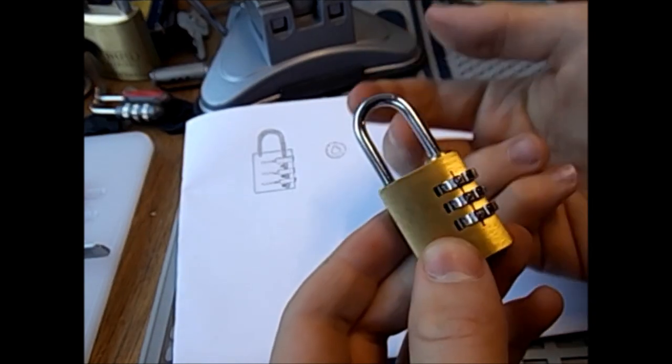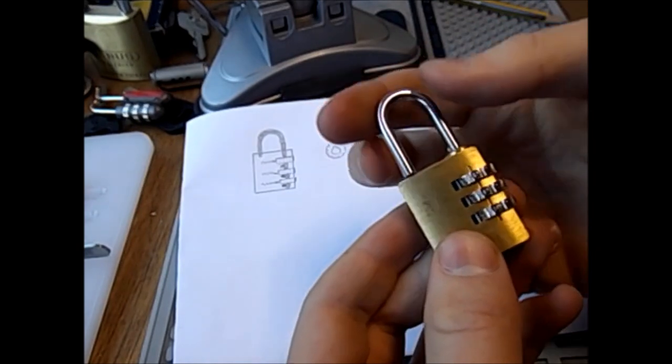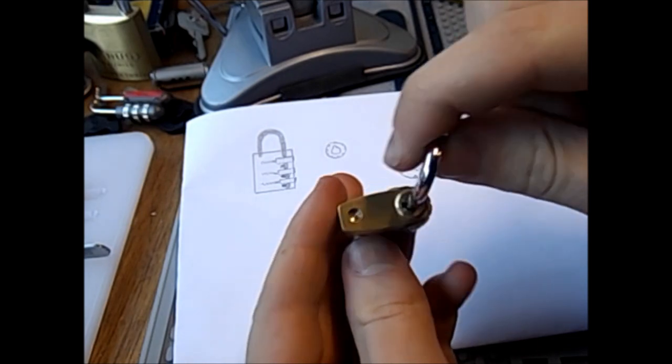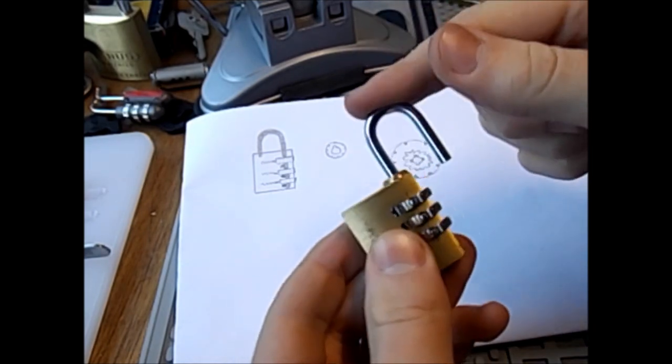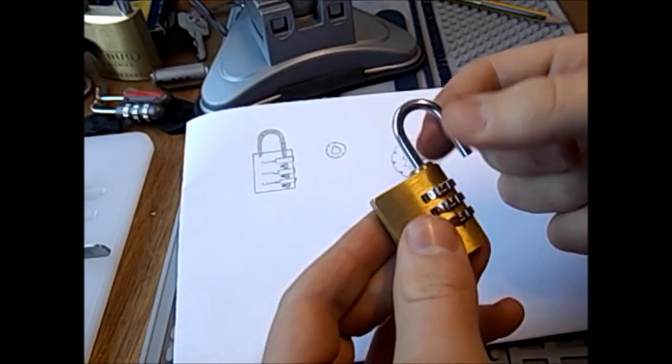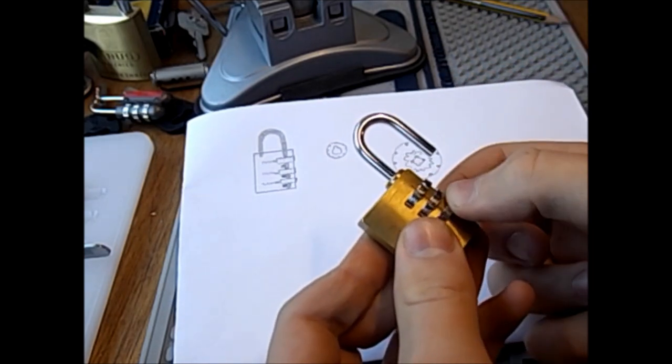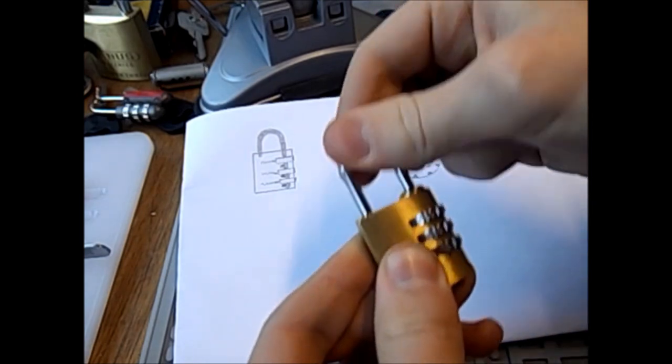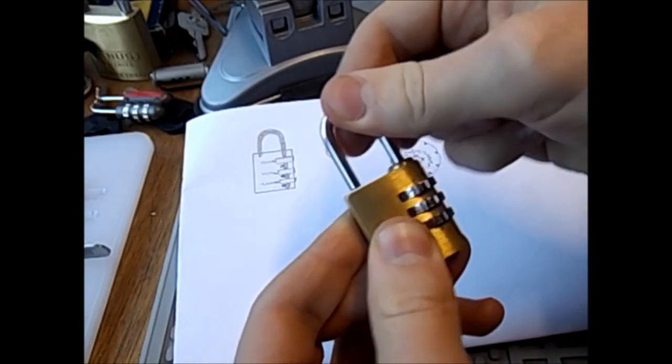And so the way these usually work is quite simple. You put the right combination in, you can turn the shackle 180 degrees or 90 degrees depending on the lock, push down and change the combination. We're going to change this to 1, 2, 3, lift the shackle up, close it and of course it will lock and operate as usual.